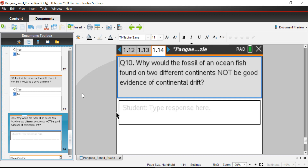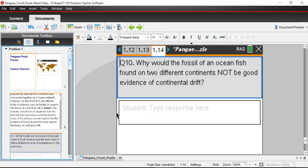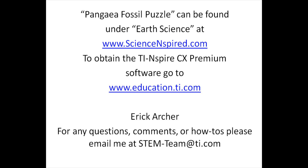Question ten: why would the fossil of an ocean fish found on two different continents not be good evidence of continental drift? Obviously, if it's an ocean fish, it can swim from one place to another — it's not a land-dwelling animal, so it would be hard to use that as evidence of continental drift, since it could simply swim from the shore of Africa to the shore of South America. That's the end of this activity. Please check back for more on our YouTube channel, TI Calculators. Hope this was helpful — have a great day!